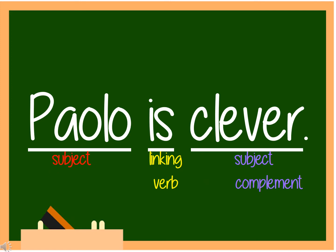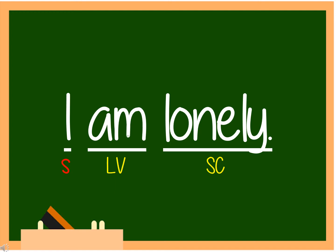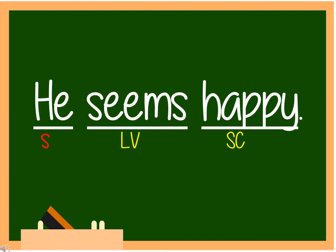For example, 'Paulo is clever.' Paulo is our subject. Is is our linking verb. And clever is our subject complement because it describes our subject, who is Paulo. 'I am lonely.' I is our subject. Am is our linking verb. And lonely is our subject complement. In this sentence, 'He seems happy.' Our subject is he. The linking verb is seems. And the subject complement is happy.